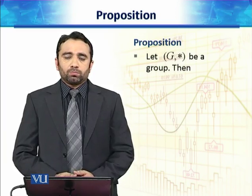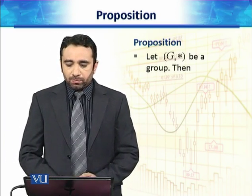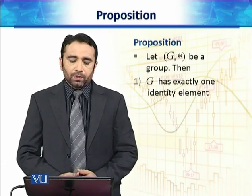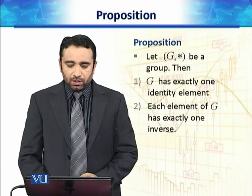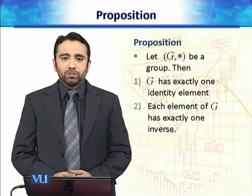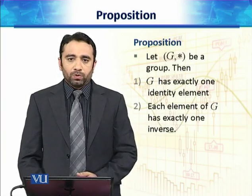So, our first result is let G be a group then G has exactly one identity element and each element of G has exactly one inverse.